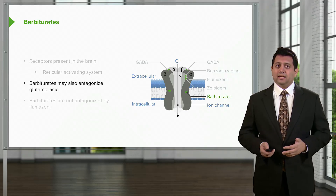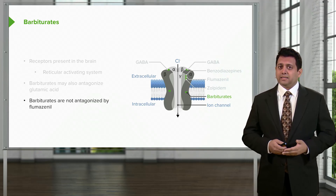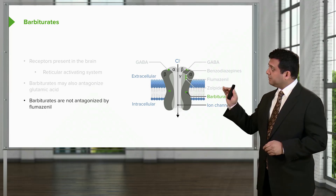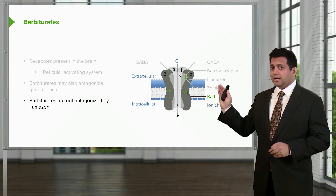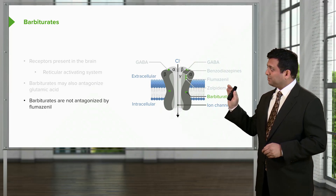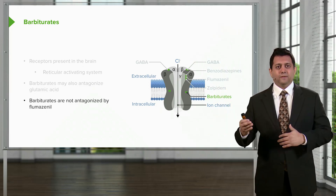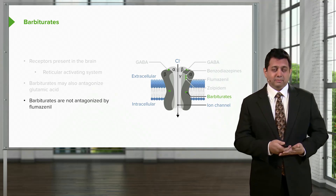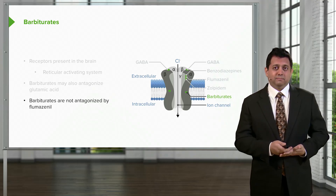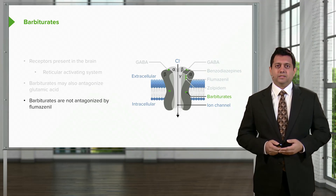Barbiturates may also antagonize glutamic acid. Barbiturates are not antagonized by flumazenil. Look where flumazenil is and where it binds to the gamma subunit, and then take a look at where the receptor binding site is for barbiturates — they're quite far apart. Flumazenil is an antidote to benzodiazepine poisoning or overdose; it does not work against the barbiturates.